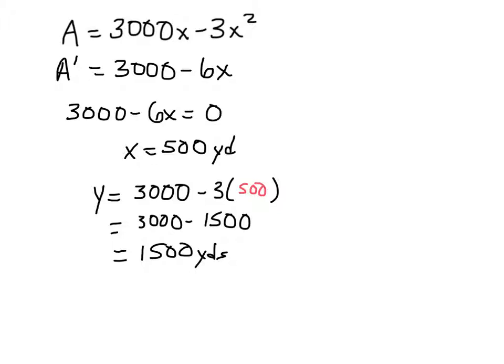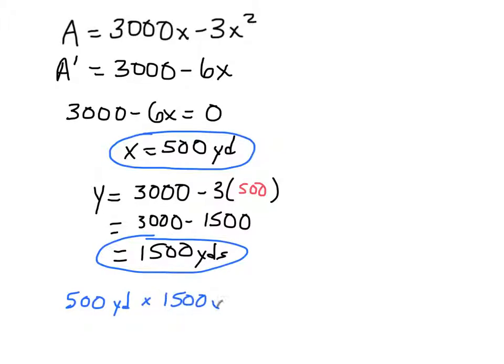So x is 500 yards. And y is 1,500 yards. So those are the dimensions. 500 yards by 1,500 yards. The total area that this will enclose is the value that we get when we multiply those two numbers. And so that value happens to be 750,000 square yards.